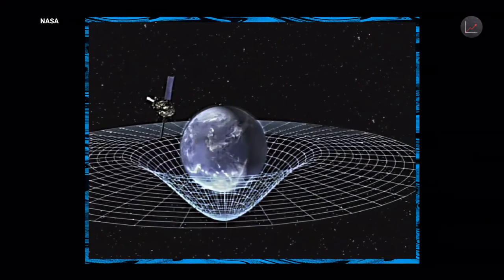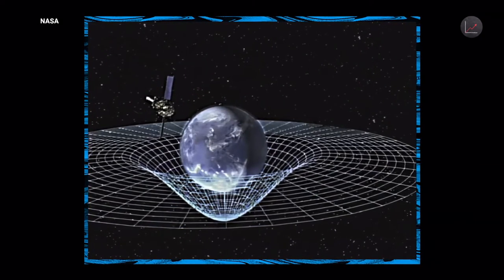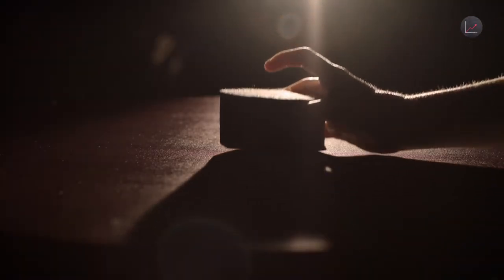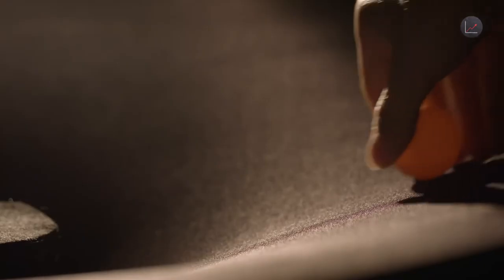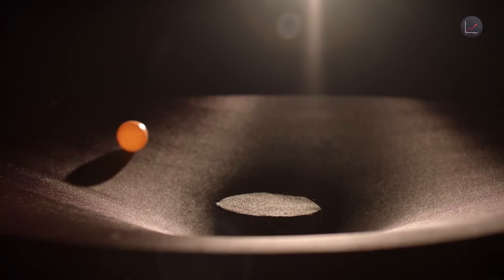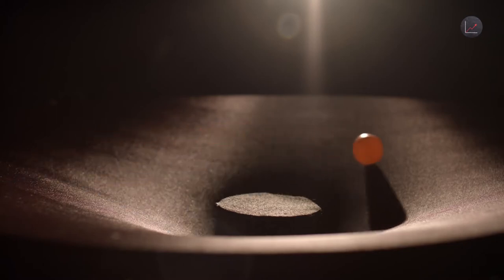To get your head around it, take this old analogy used to illustrate how matter bends space-time. If you put a heavy object on a trampoline, it falls in and curves the rubber sheet. Now, if you roll a ball on the trampoline, it will keep orbiting the heavy mass in the center. That's how a planet behaves when it's attracted by the gravity of a star.